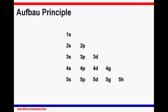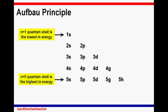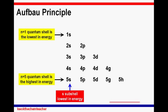We will be sharing more about the Aufbau Principle. N equals to one quantum shell is the lowest energy, while N equals to five quantum shell is the highest energy in this series that is shown. The S subshell has the lowest energy, while the higher subshells have the highest energy in this series shown.